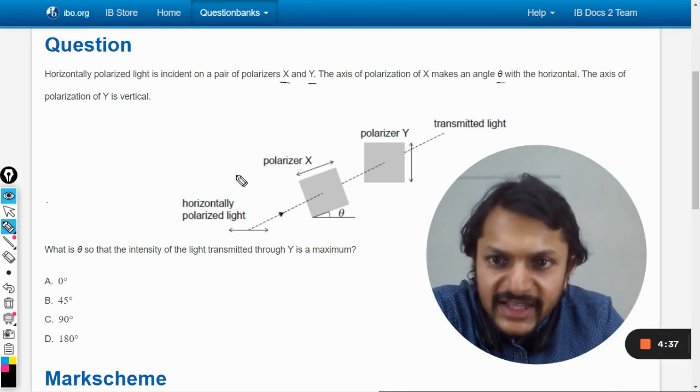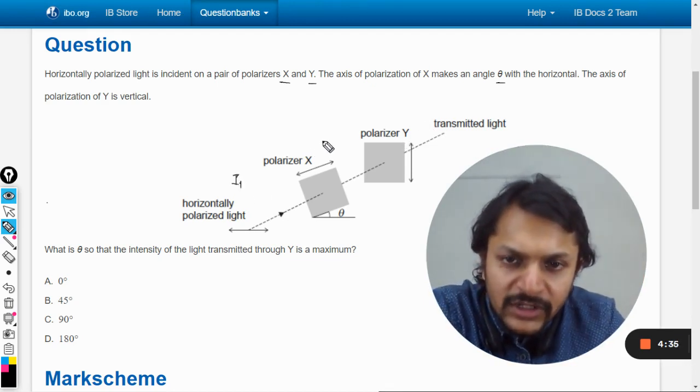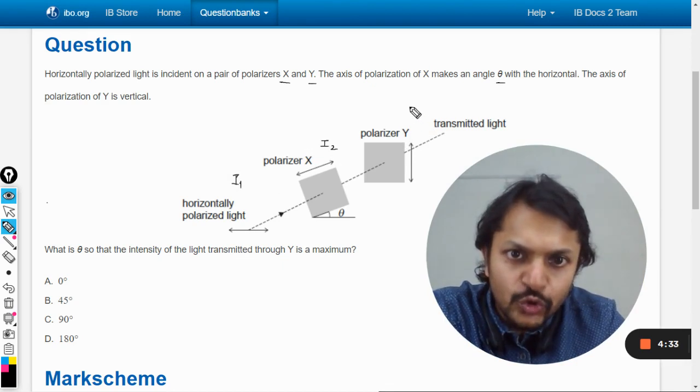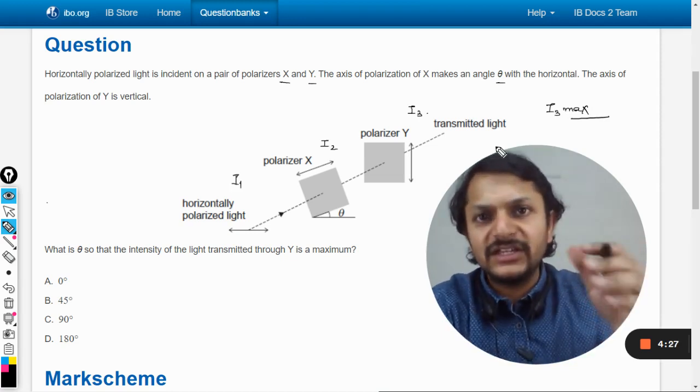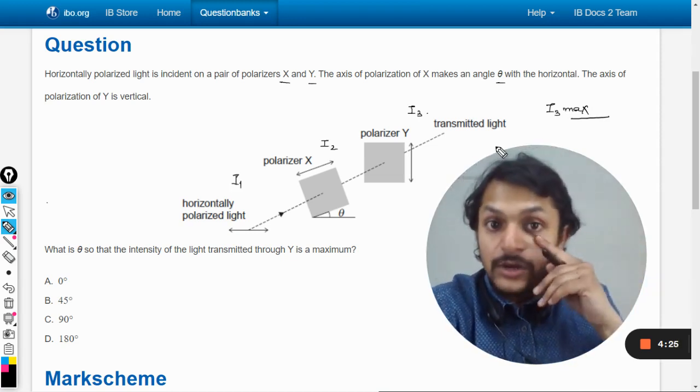So let us say that the intensity here is i1, intensity here will be i2, intensity here is i3, and we want to find the condition for maximum intensity after i3, like after polarizer Y.